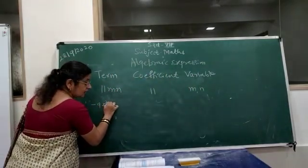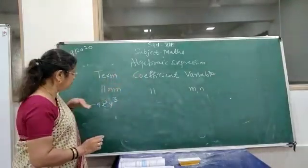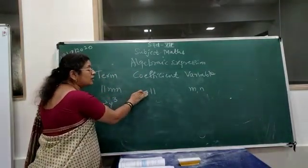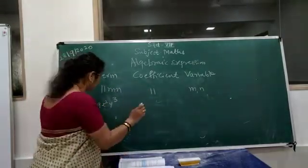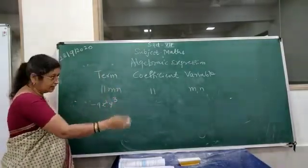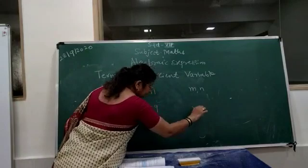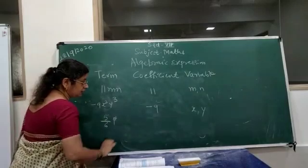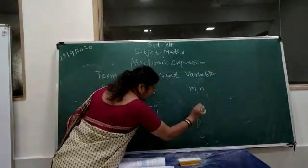If I take minus 9X squared Y cubed: whenever a minus sign is there, you must take it along with the coefficient. We do not write the plus sign because it is understood. So here, the coefficient is minus 9 and the variables are X and Y.